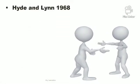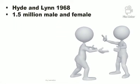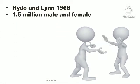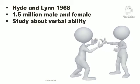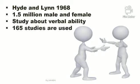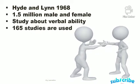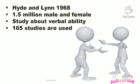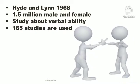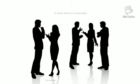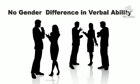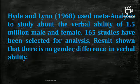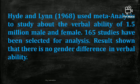Hyde and Lean used the meta analysis method in 1968, studying 1.5 million male and female verbal ability samples. In this study, 165 studies were included, and the result showed there is no gender difference in verbal ability.